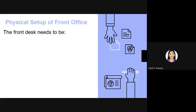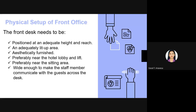The physical setup of the front office: the front desk needs to be positioned at an adequate height and reach. An adequate lift-up area is typically furnished, preferably near the hotel lobby and lift, and near the seating area. It must be wide enough to allow staff to communicate with guests across the desk.